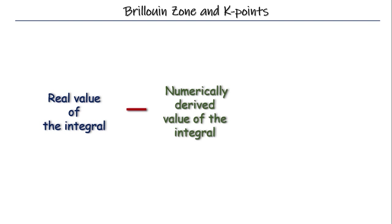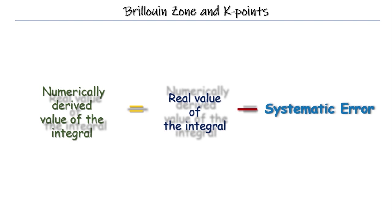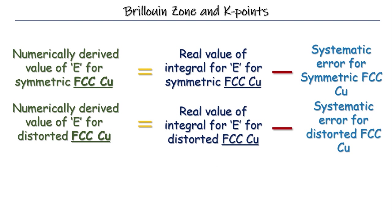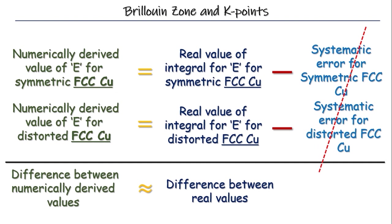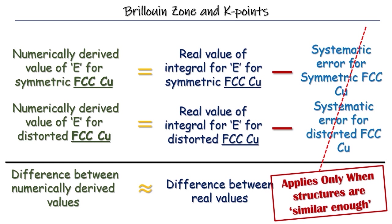Now let us call this term systematic error or in other words, we can say numerically derived value equals to real value minus the systematic error. Now if we are comparing two configurations which have structural similarities to a great extent, then it is reasonable to expect that the systematic numerical error is also similar. This means that the energy difference between these two can be expected to cancel out at least a portion of the systematic error leading to calculated energy differences more accurate than the total energies themselves.